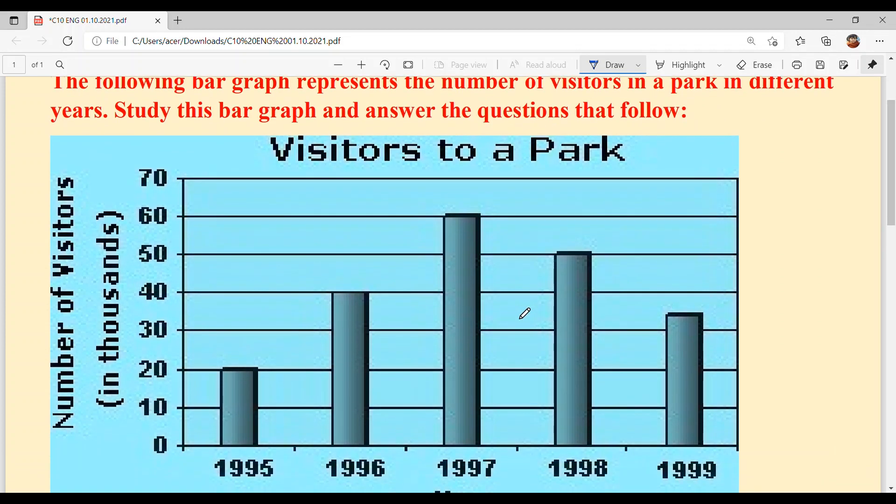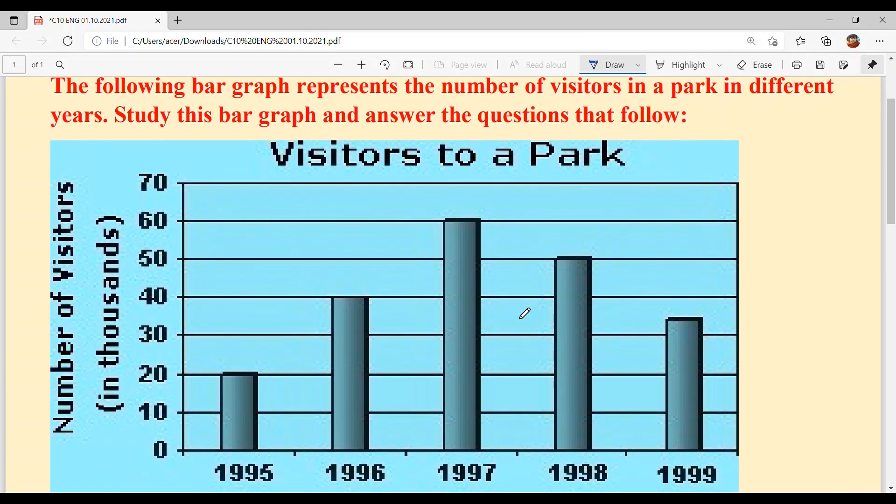Now, this graph shows the number of visitors in a park in different years. Visitors to a park is the heading, and we have the number of visitors on the y-axis.